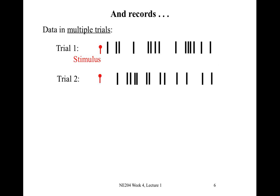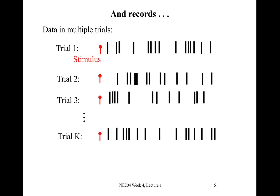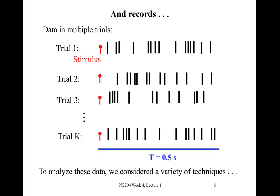That's repeated in a second trial where the same stimulus is delivered and the spiking activity is recorded here in the second trial, the third trial, and so on, all the way up to K trials. And in each of these trials, the duration of the recording is half a second or 500 milliseconds. So we observe the spiking activity of this individual neuron for half a second. And what we focused on last week were ways to analyze these data.